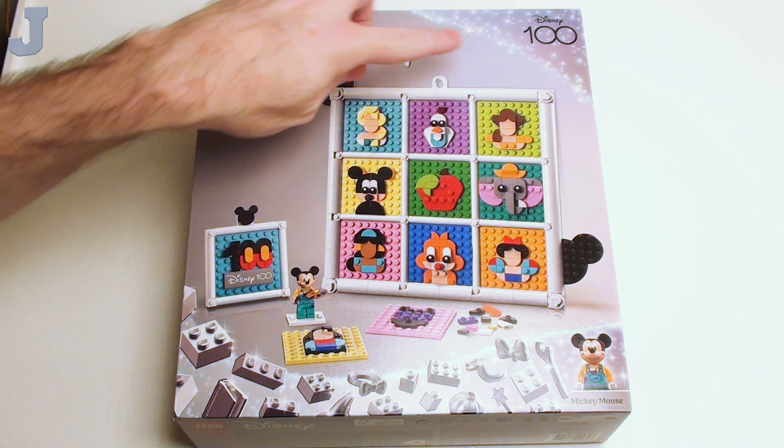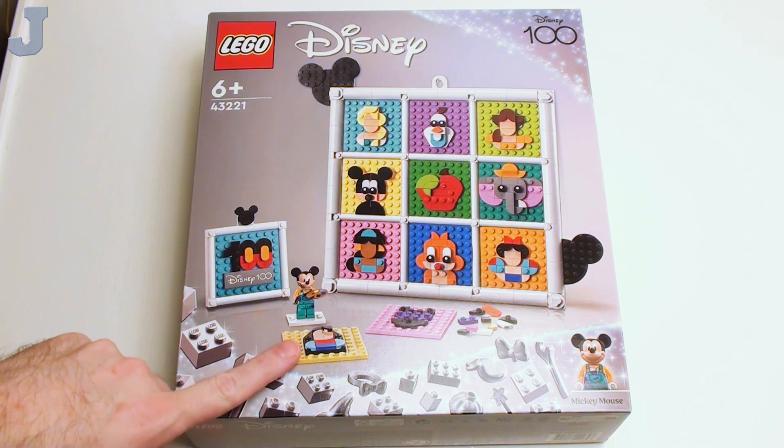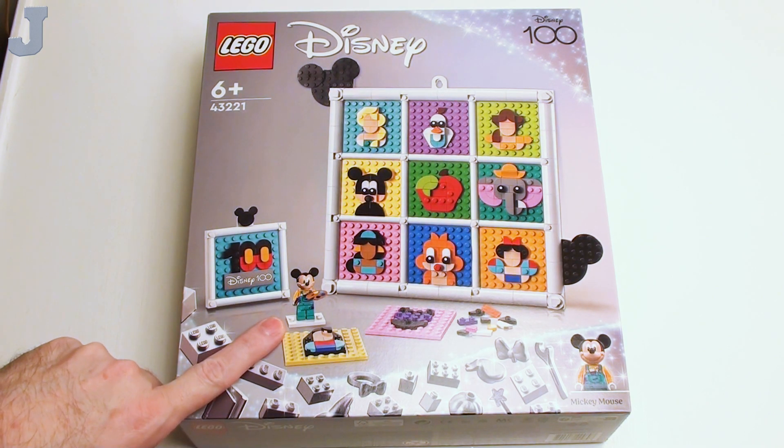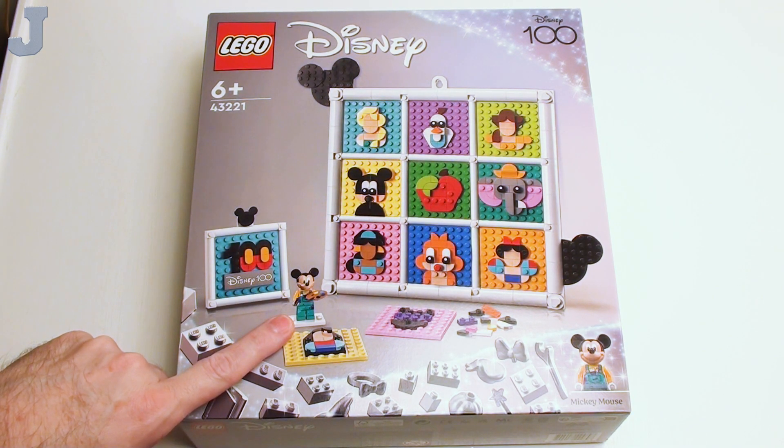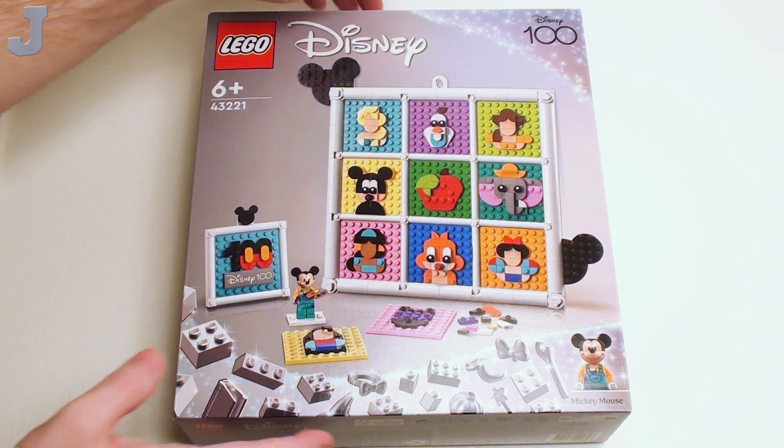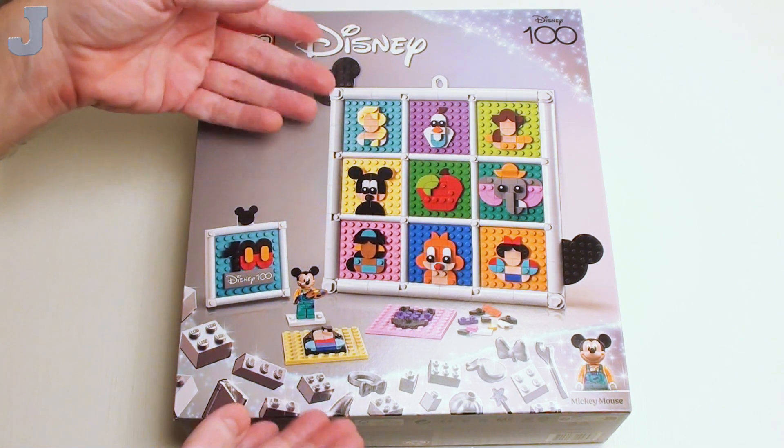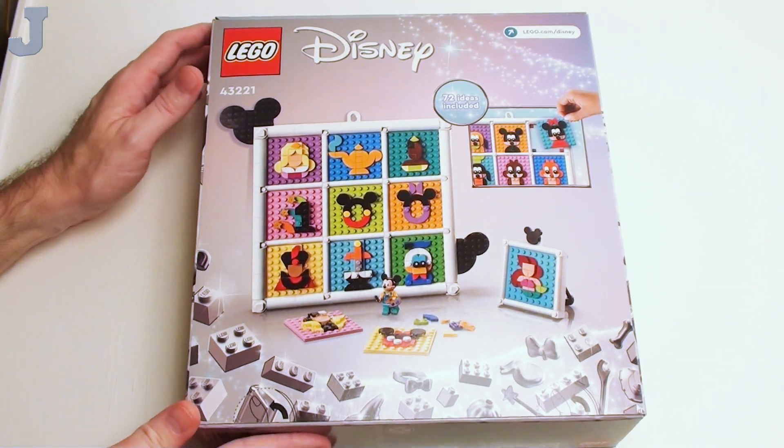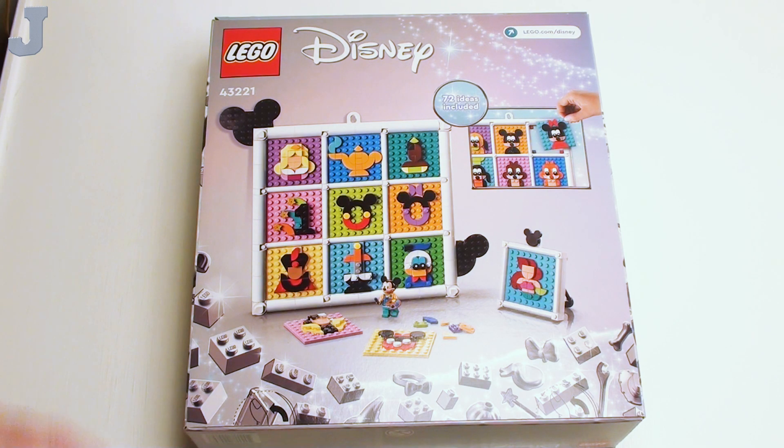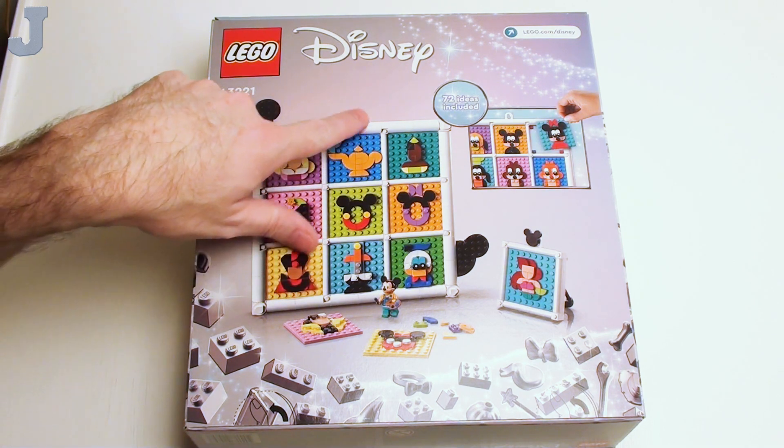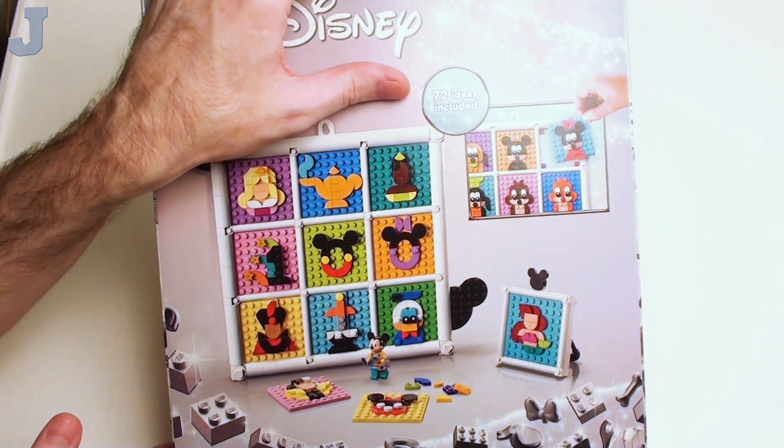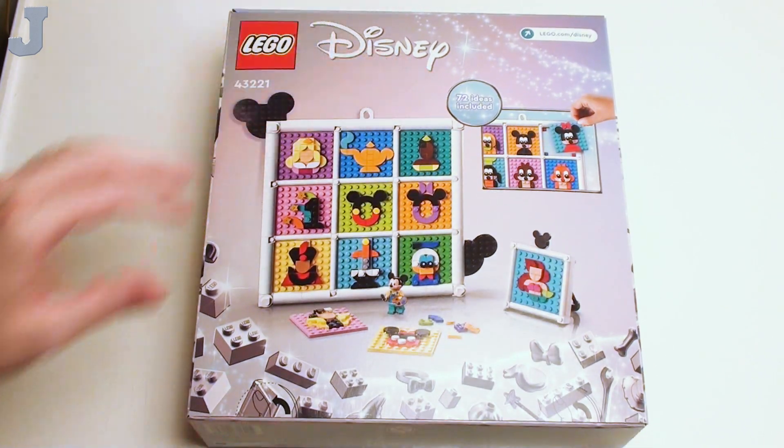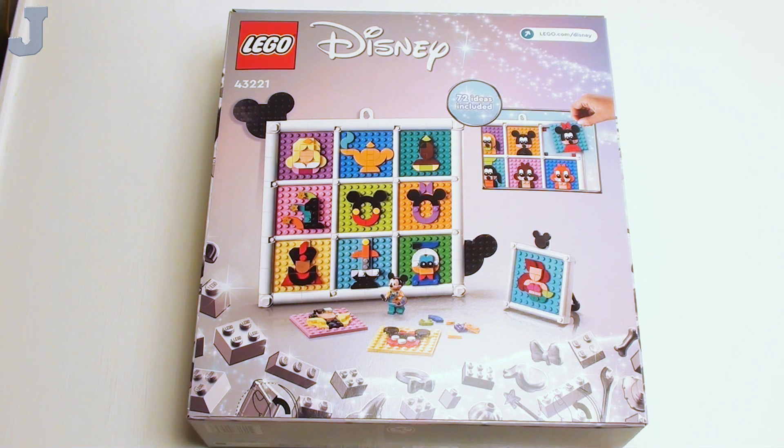And this is pretty much what it is. It's a picture frame, and we're making pixel art. We get Mickey Mouse included. It doesn't look too bad. I think it's just the bland color of the box that makes it look rather boring. Here's the back. And it says you have 72 ideas included, and you can pop those out and stuff.